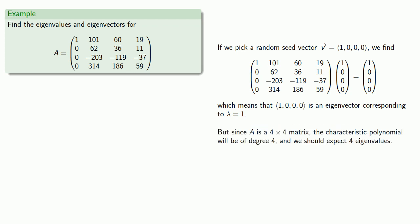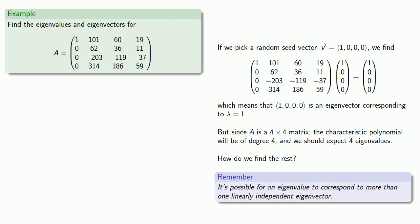But since A is a 4x4 matrix, the characteristic polynomial will be of degree 4, and we should expect 4 eigenvalues. So how do we find the rest? To find the rest, it's important to remember that it's possible for an eigenvalue to correspond to more than one linearly independent eigenvector. So let's see if lambda equals 1 corresponds to multiple eigenvectors.